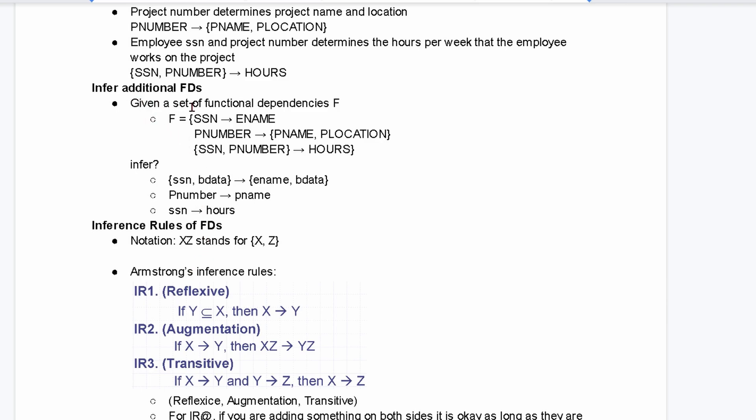So, given a set of functional dependencies, we're going to call this F. We set this equal to a lot inside of here. What can we infer from this? Well, what we're going to want to do is look for inference rules of FDs, functional dependencies.